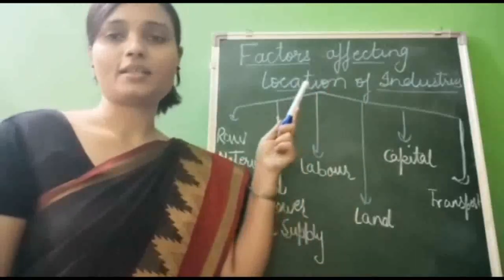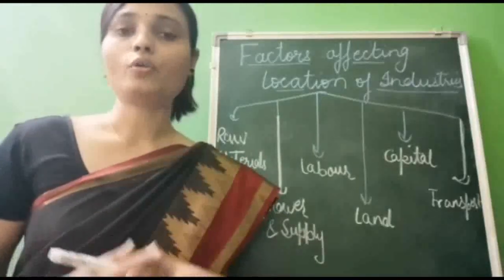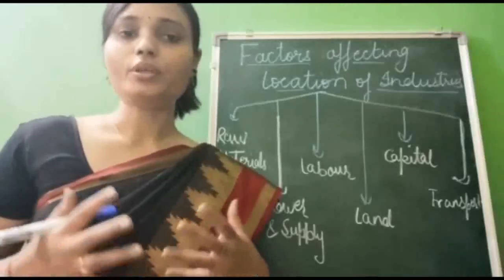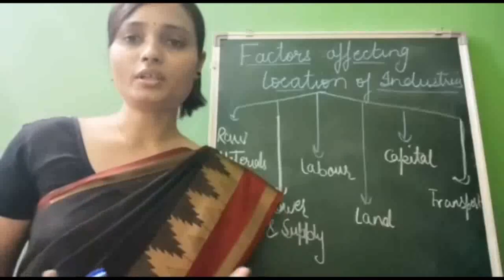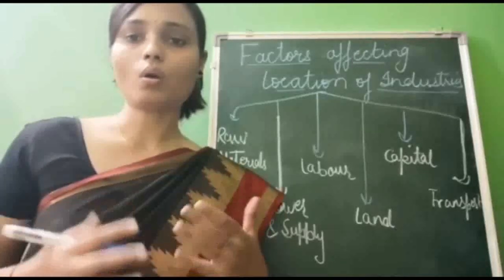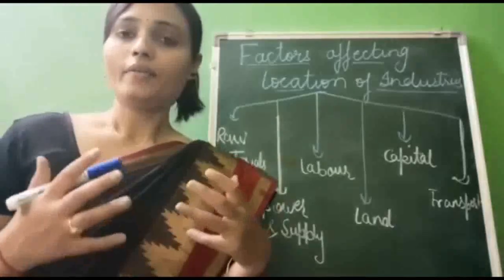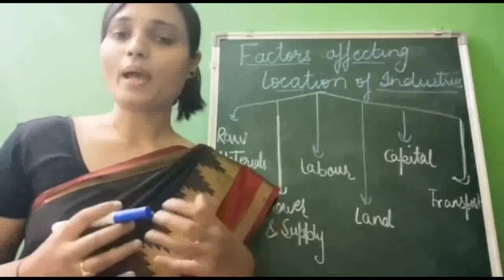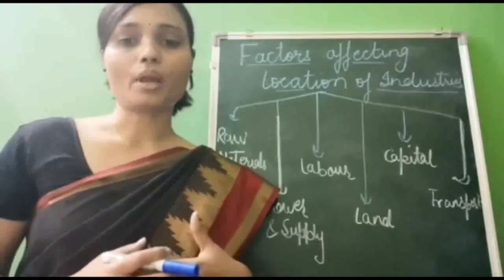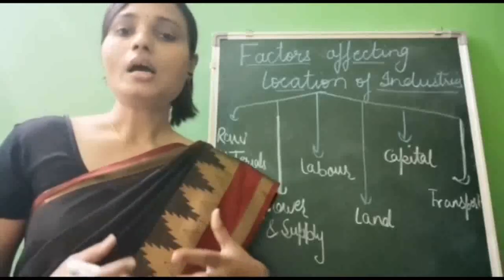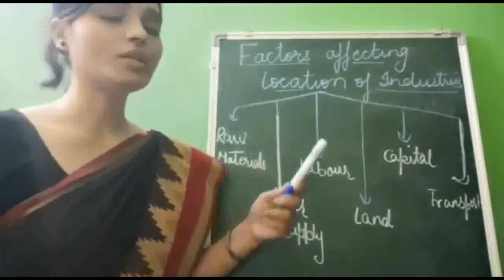Now let's understand the factors affecting the location of industries. Industries are located only at places where raw materials are easily available and goods can be sold easily. Many historical, geographical, economical, and political factors influence the choice of location. Some of the key factors are: regular and assured supply of raw material, cheap and adequate power supply, an efficient transport network at reasonable rates, adequate supply of skilled laborers at reasonable wages, and availability of capital and water.